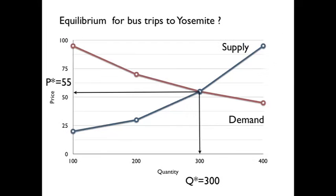This is how it started last week. Let's get a number for this market by setting supply equal to demand. The equilibrium price is at $55. If you go across at $55, that works out to about 300 bus trips — which would be six buses full of people. So this is just matching up the schedules and finding where the numbers line up, whether graphically or by looking at the schedules directly.